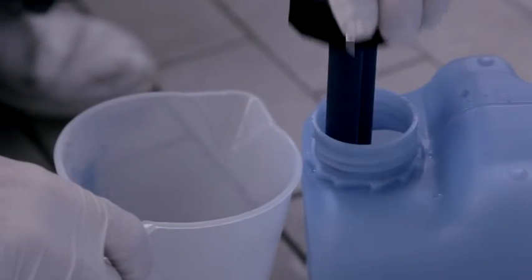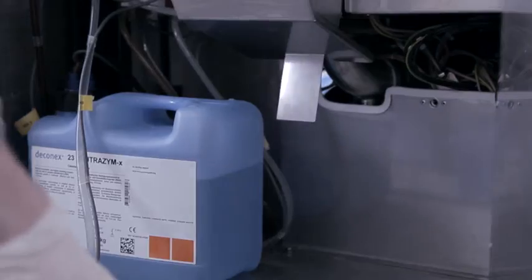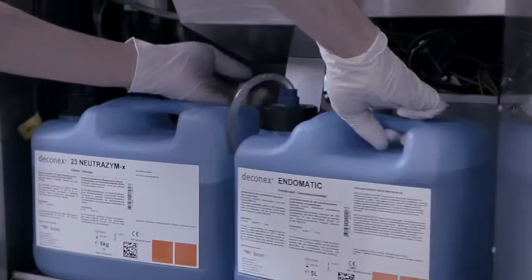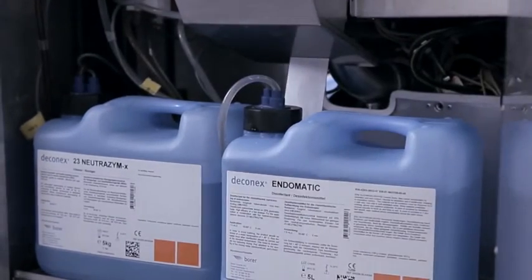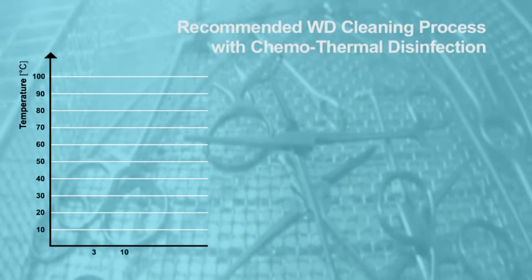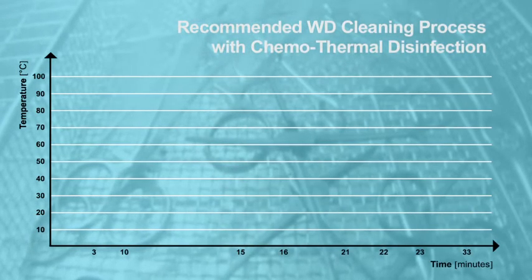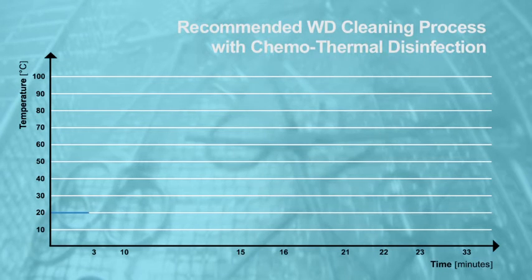For thermal labile instruments, such as some anesthetic utensils and flexible endoscopes, a different WD cleaning process with chemothermal disinfection is recommended. Similarly, and as before, the WD process starts with a cold pre-rinse for approximately three minutes.